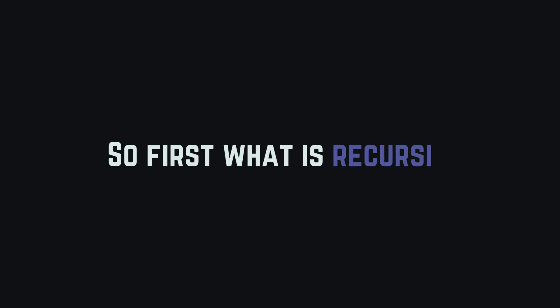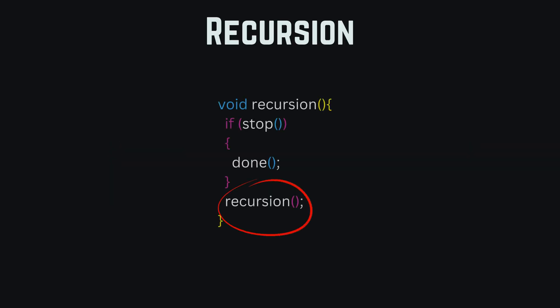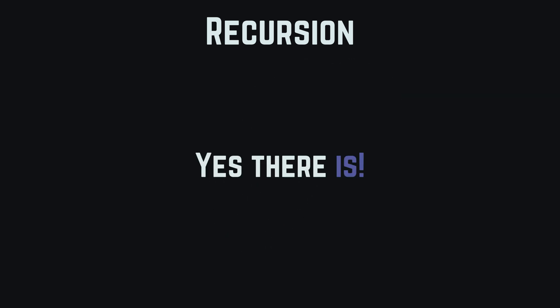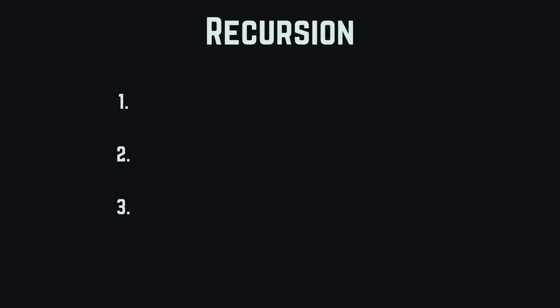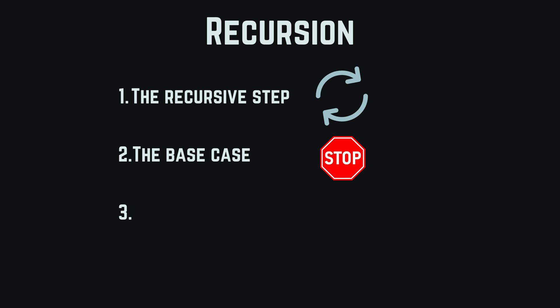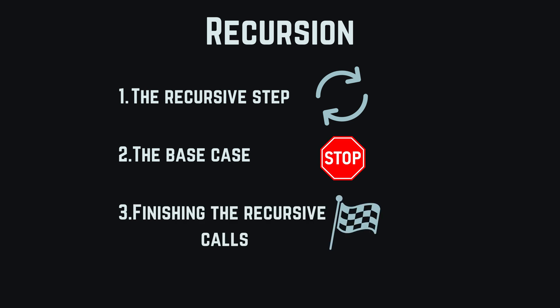So first, what is recursion? Recursion is essentially a function that calls itself. Additionally, we have a stopping condition to prevent our program from crashing. Is there any formula that any recursion follows? Yes, there is. Recursion always uses these three steps. First, the recursive step, where the function calls itself but each time with some small change. Then second, the base case, which acts as the stopping condition. And third and last, finishing the recursive call by going backwards to close all the previous recursive calls.